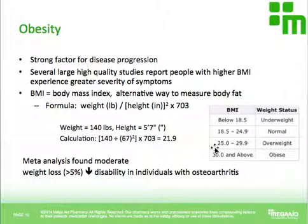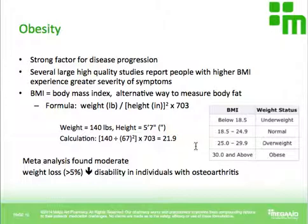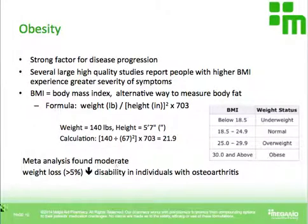One disclaimer: this formula and calculation only really applies to an average person — somebody who doesn't exercise a lot, or does mild to moderate exercise that doesn't really build muscle. If you look at a professional athlete or a bodybuilder, they're building muscle and muscle tends to weigh a lot heavier than fat. So even though they may weigh more and be medically considered obese, their actual percentage of body fat is a lot smaller than an average person's, meaning BMI is not really applicable to them as an accurate way to measure body fat. Meta-analyses demonstrate that even moderate weight loss will decrease disability or severity of symptoms in individuals with osteoarthritis.